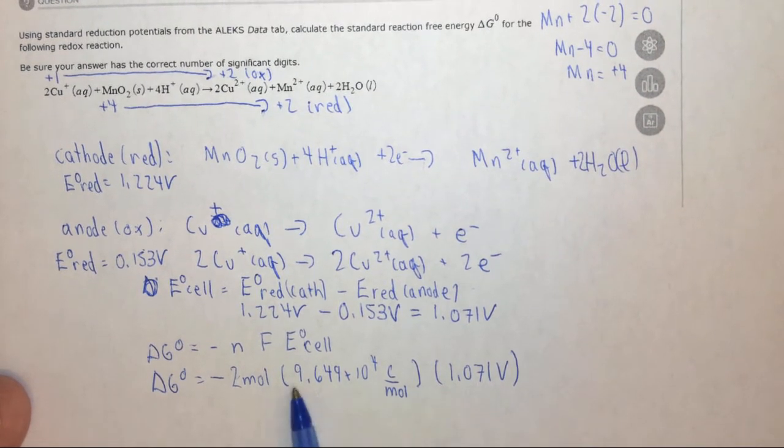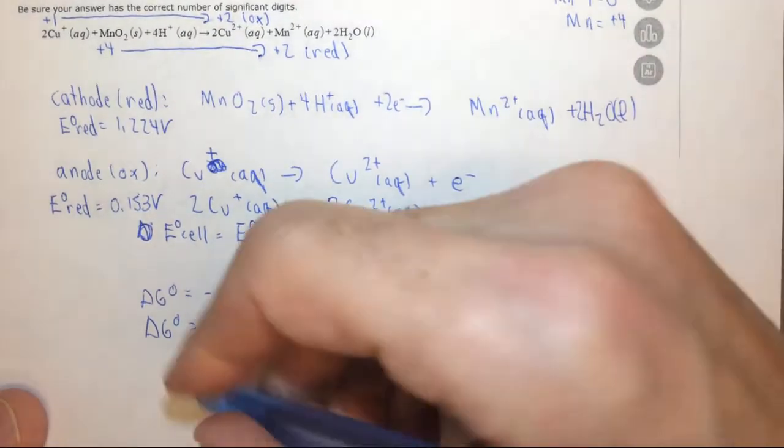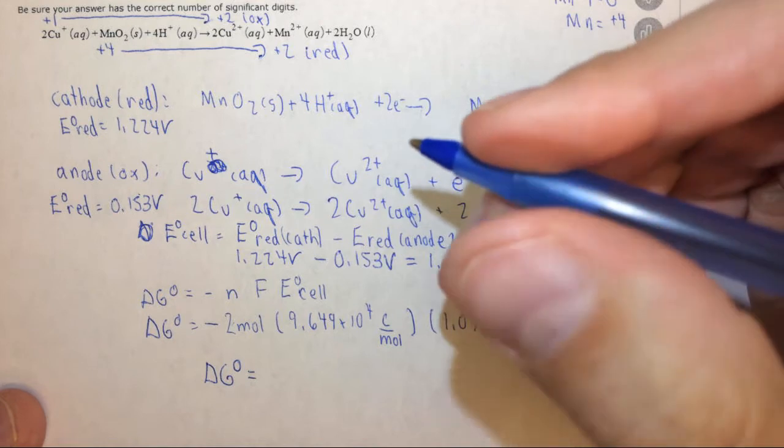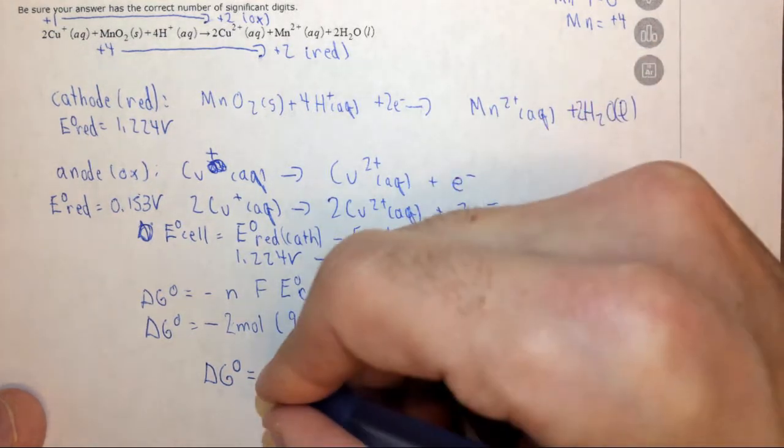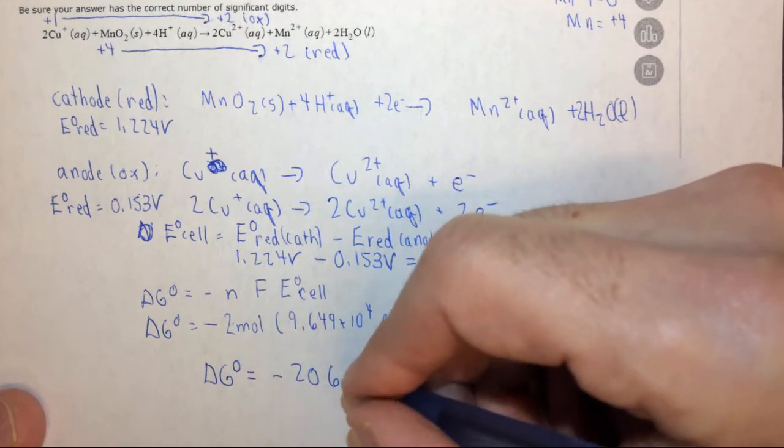Now the two is a counted number, so it doesn't have sig figs. So we have four sig figs here and four sig figs here. So our delta G should have four sig figs.